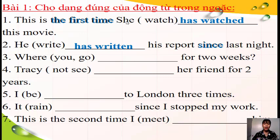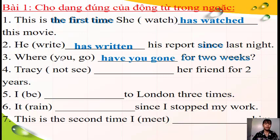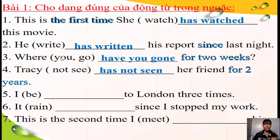Câu số 3 là câu nghi vấn. Chủ từ là 'you' được đặt ở trong mệnh đề, nên theo công thức cô sẽ có 'Have you gone?' Câu số 4: từ nhận biết là 'for two years', đây là thể phủ định - nhớ thể phủ định thêm 'not'. Chúng ta chỉ việc thêm 'not' phía sau trợ động từ 'have' hoặc 'has'. 'Crazy' là tên riêng số ít, cho nên cô sẽ chia thành 'has not seen'.